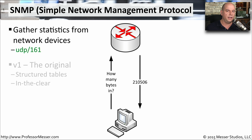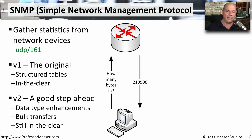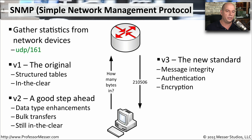There have been a few different versions of SNMP. Version 1 was the original, with a structured way of communicating, but it provided that communication in the clear with no encryption or data protection. Version 2 added data enhancements and allowed bulk data requests instead of asking for things one at a time, but still didn't provide any security. For that, we needed SNMP version 3, the current standard, which includes message integrity, authentication, and encryption with SNMP queries.